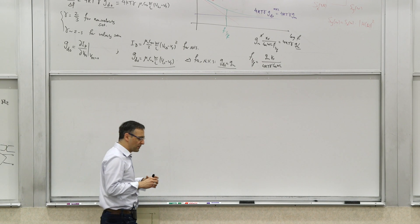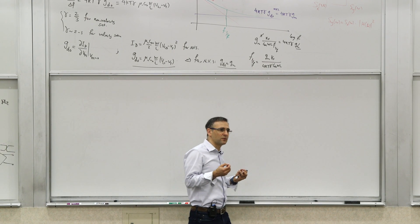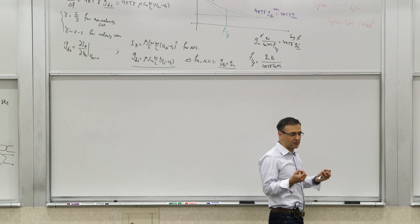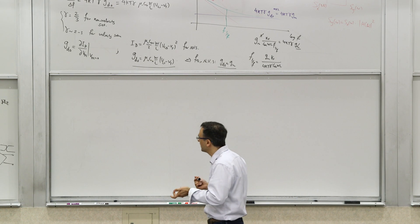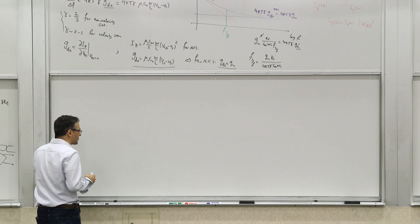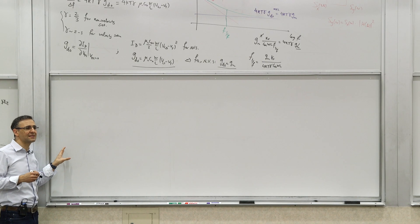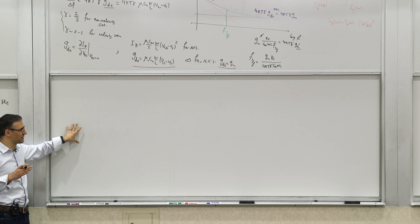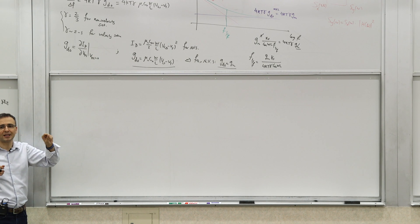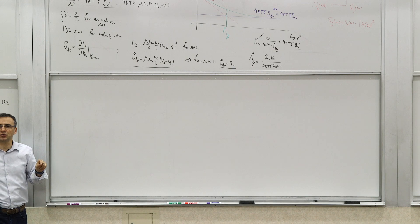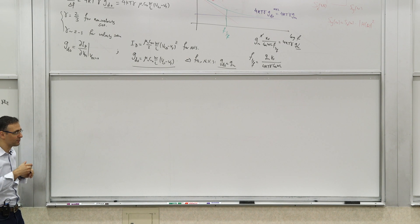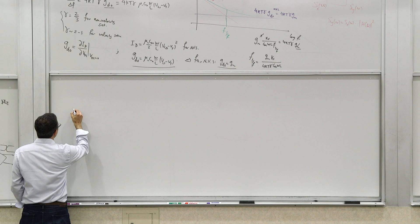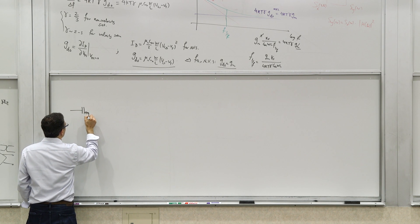After having developed a basic model for the noise in the transistors, let's start looking at some circuits, in particular some amplifiers. What we're trying to understand in this discussion is the concept of input-referred noise and how the noise in the basic transistor model works. Let's start talking about a very basic transistor amplifier.